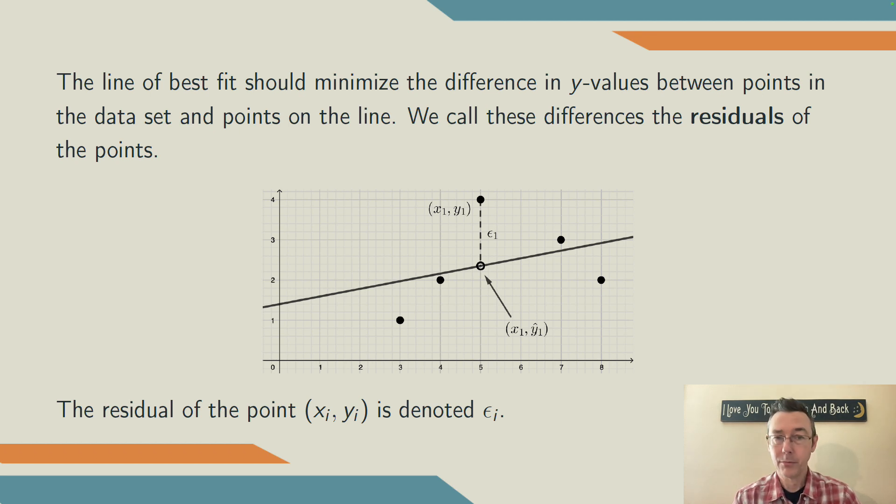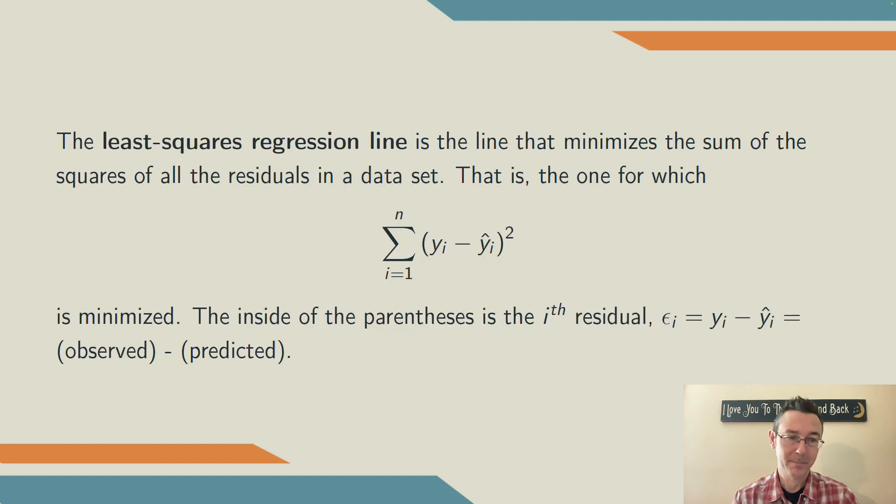The i-th residual, the residual of the i-th observation in a data set, is denoted epsilon sub i. The least squares regression line is the line that minimizes the sum of the squares of all the residuals in the data set. It's trying to minimize the quantity that I'm showing here, which is just the sum of the squares of all the residuals.